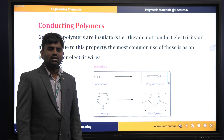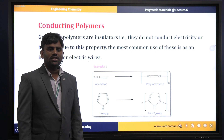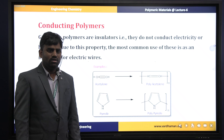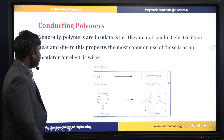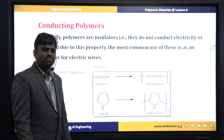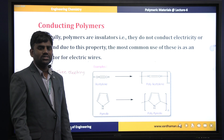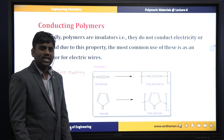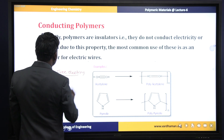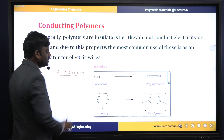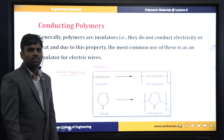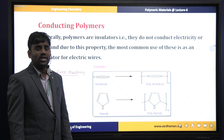As we know, generally polymer materials are insulated. Why are they insulated? Because of the lacking of free electrons. We know that the reason for conductance is due to the availability of free electrons. But in case of polymer materials, the availability of these free electrons is lacking, so most of the polymer materials are insulated.